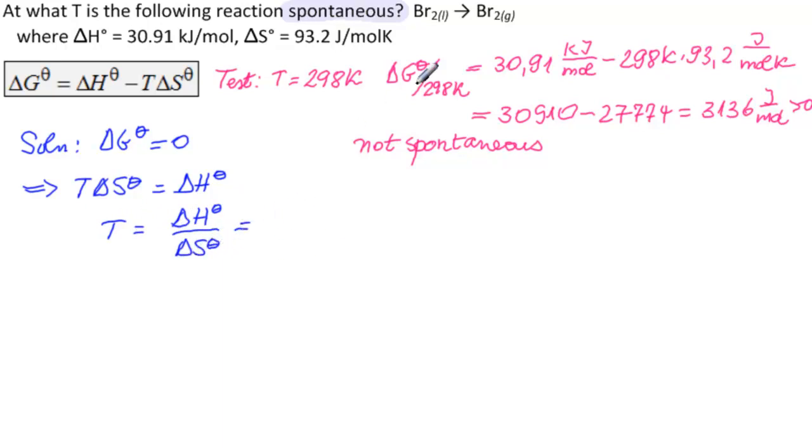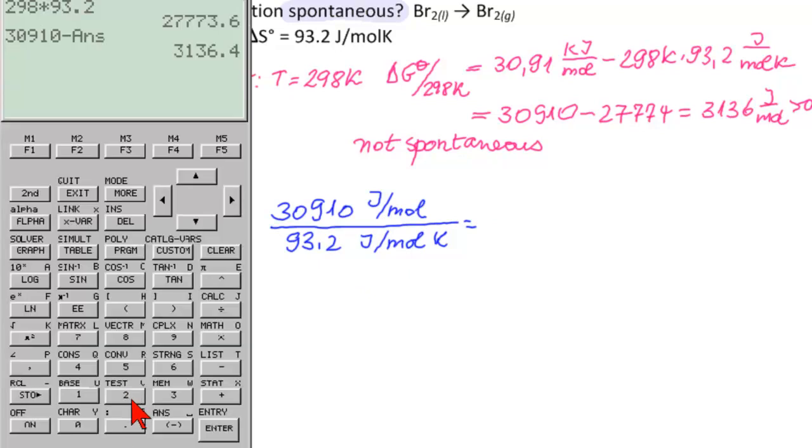So now we can calculate that. This is 30,910 joules per mole divided by 93.2 joules per mole Kelvin, so we expect to get Kelvin here. Let's get our calculator up, so we have 30,910 divided by 93.2.